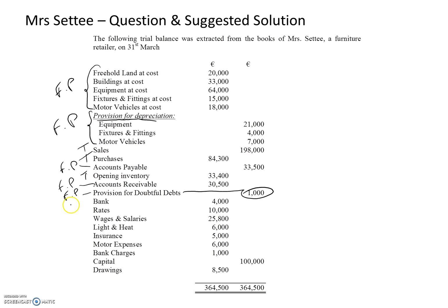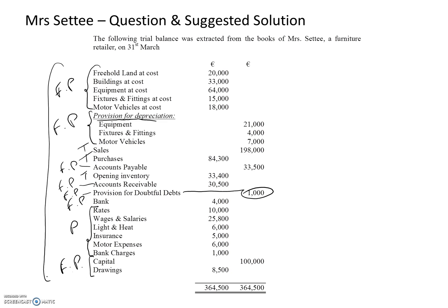The provision for doubtful debts will appear in the statement of financial position. The bank will also appear in the statement of financial position. From rates down to bank charges, they are all expenses and will appear in the profit and loss account. Capital and drawings will appear in the statement of financial position. At this stage we have discussed every single item in the trial balance.